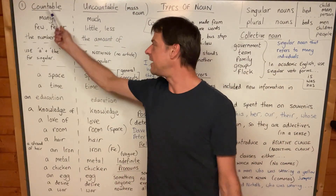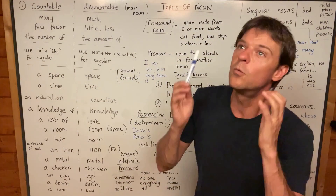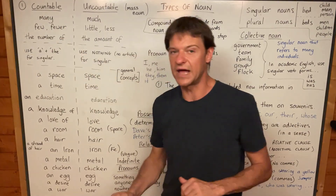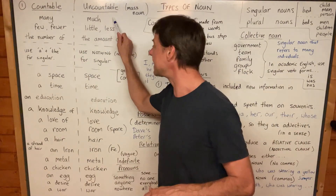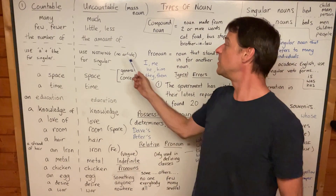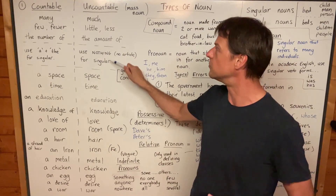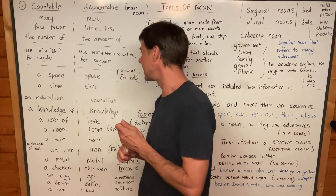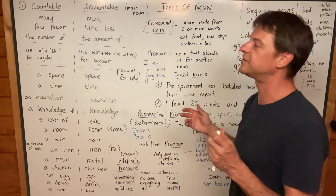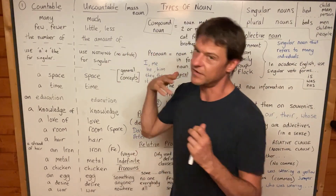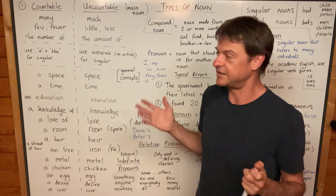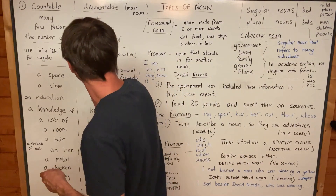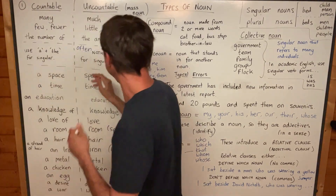With countable nouns, we use 'a' or 'the' in the singular — we must. We can't have no article with a countable noun used in the singular. But with uncountable nouns in the singular, we mustn't use an article — they have no article for the singular form. You might use 'the' before an uncountable noun in the singular, but often it's nothing. So let's say: often, nothing for the singular of uncountable nouns.